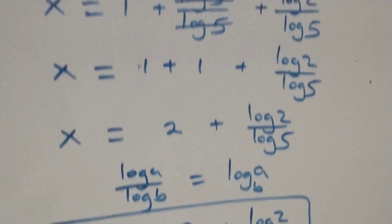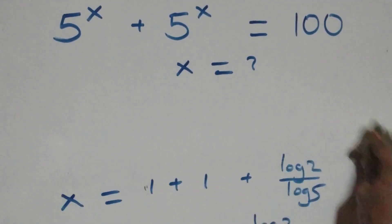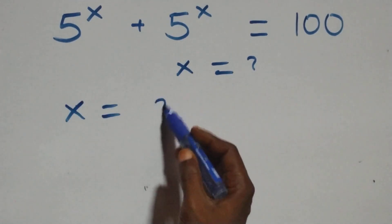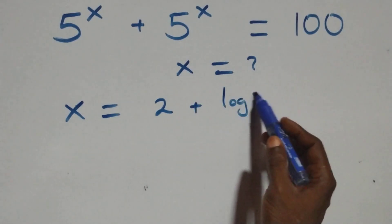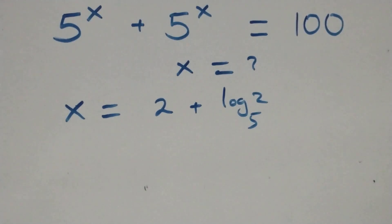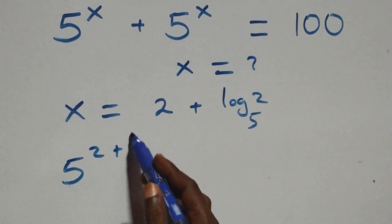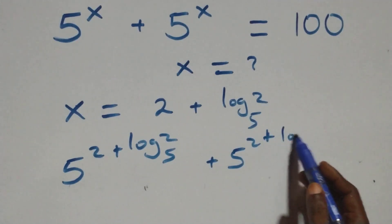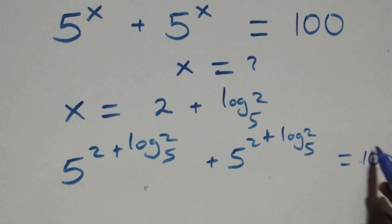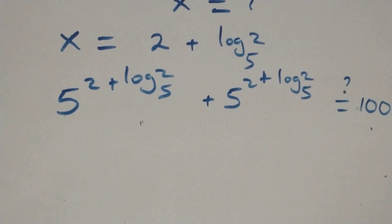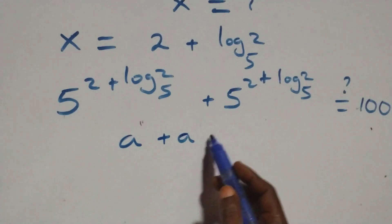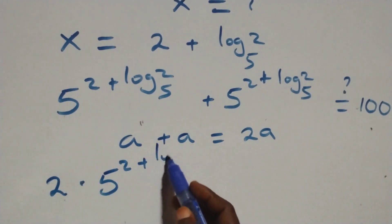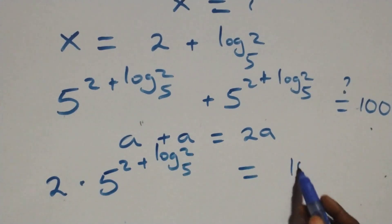Let's check if this satisfies the given problem. We substitute the value of x, which is x equals to 2 plus log₅2. What we have becomes 5 raised to power (2 plus log₅2) plus 5 raised to power (2 plus log₅2), which equals the right-hand side. Since we have the same thing added together, a plus a equals 2 times a. So we have 2 times 5 raised to power (2 plus log₅2) equals the right-hand side.